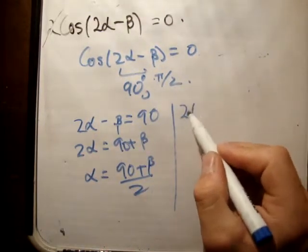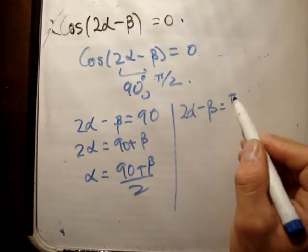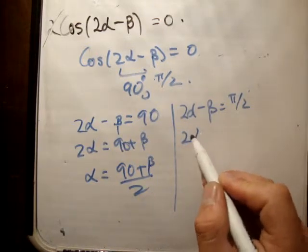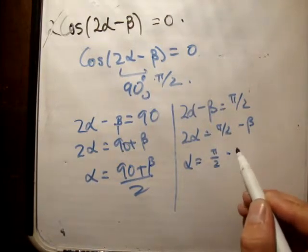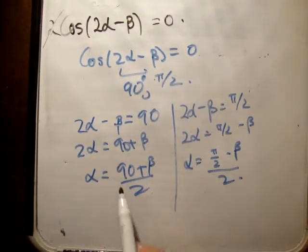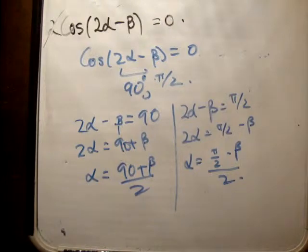Similarly, 2 alpha minus beta is equal to pi over 2. 2 alpha is equal to pi over 2 minus beta. Alpha is equal to pi over 2 minus beta over 2. They do the same thing. And that's the answer.